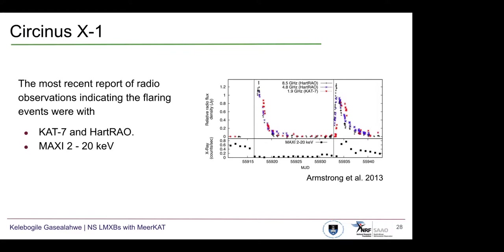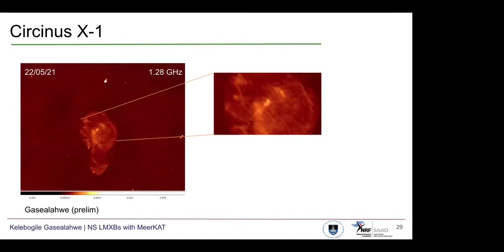Here is an image from the first of those observations. The imaging process was very similar to that done with SAX J1808's data. For this object it revealed the nebula around the source — identified here is the central source, and at the bottom is what is thought to be part of one of the jet lobes.